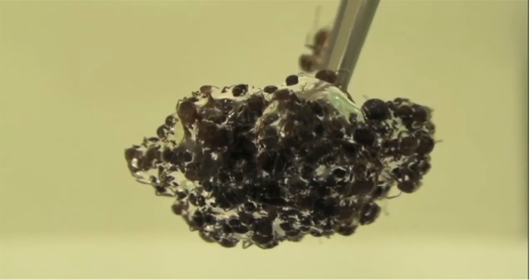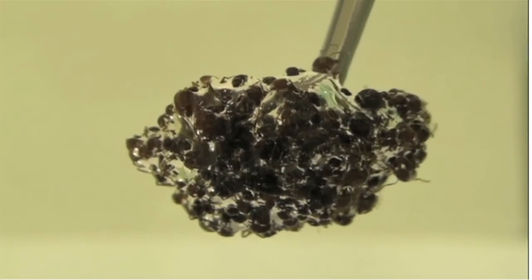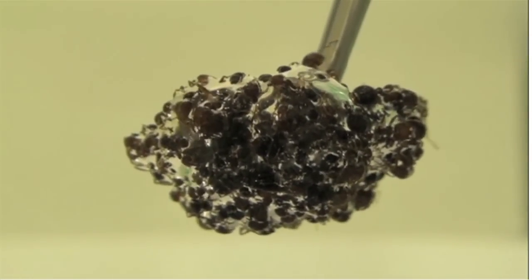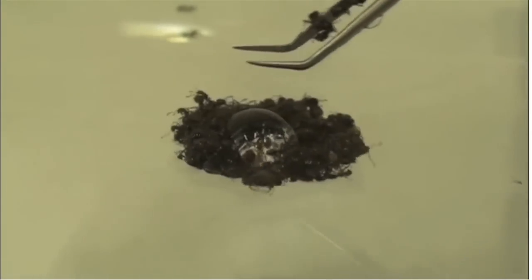Even when the scientists try to submerge the raft, the water's surface deforms around the ants, similar to the way a trampoline flexes around its jumper.